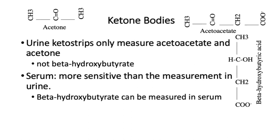It's important to note that ketone strips — keto strips — measure only acetoacetate and acetone; they do not measure beta-hydroxybutyrate. This is key because later in treatment, beta-hydroxybutyrate levels are actually increased briefly, and it will seem like the ketone body situation is getting worse when you are actually starting to resolve ketosis. Serum levels are more sensitive than measurement in urine, and serum measurements have the advantage of being able to measure beta-hydroxybutyrate.